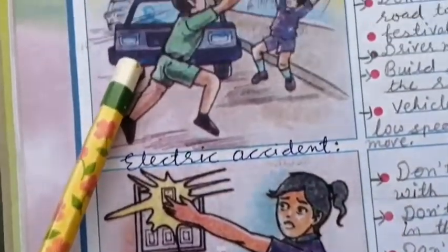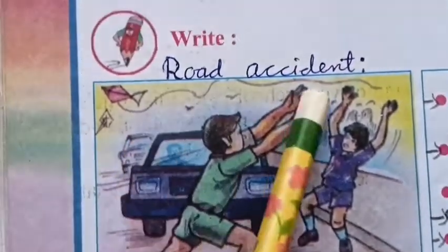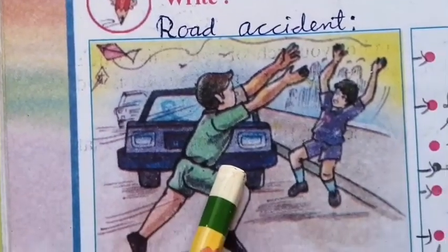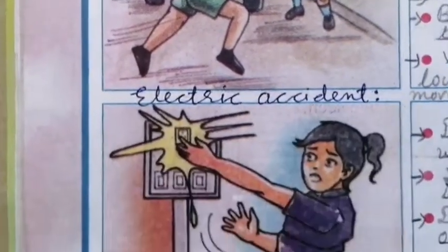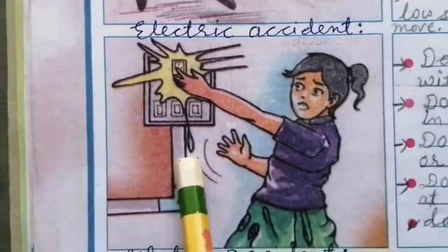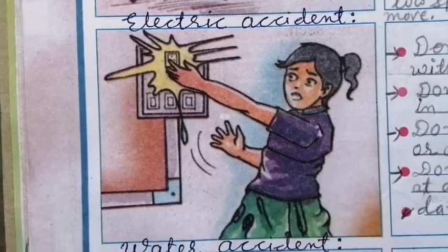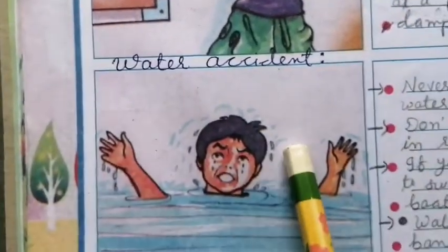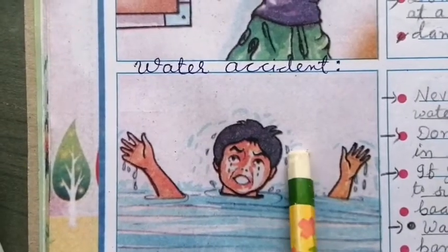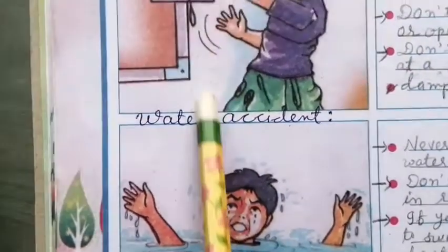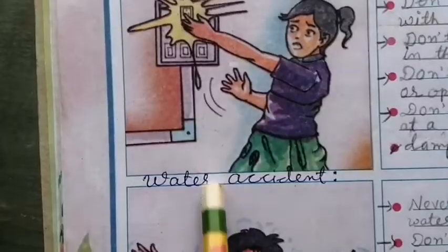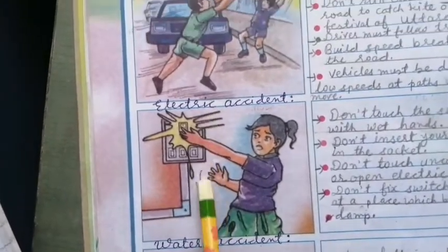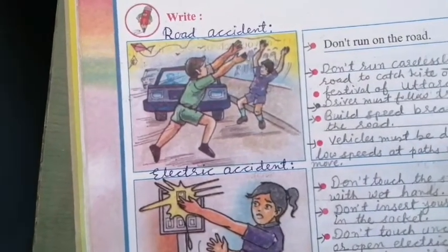First picture is a road accident. Second picture is an electric accident. And the third picture is a water accident. Now, we have to write about the prevention of each accident.